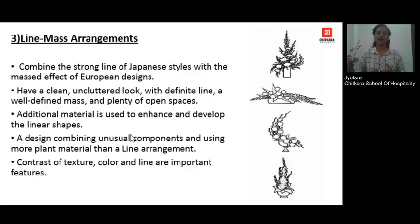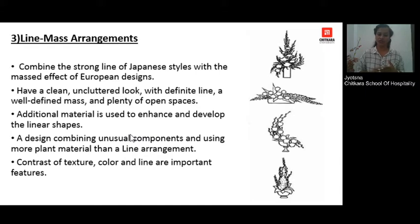The third category is your line-and-mass arrangement. It combines the features of both your line and the mass — so you will have a good number of plant materials and a good amount of space, which is pretty well organized in the arrangement.